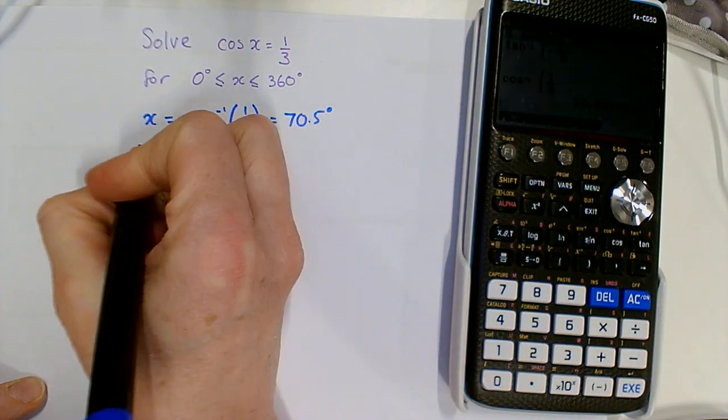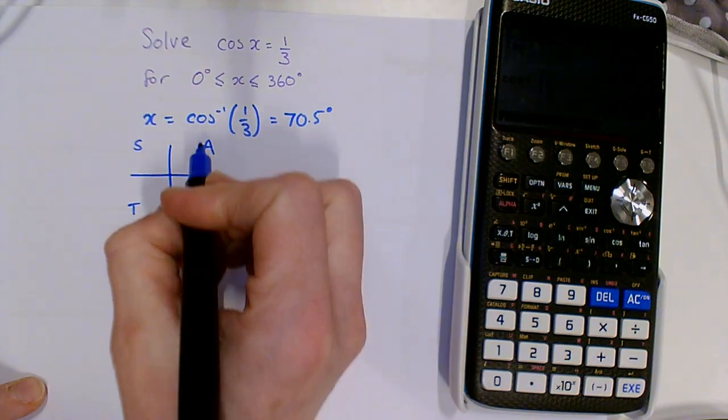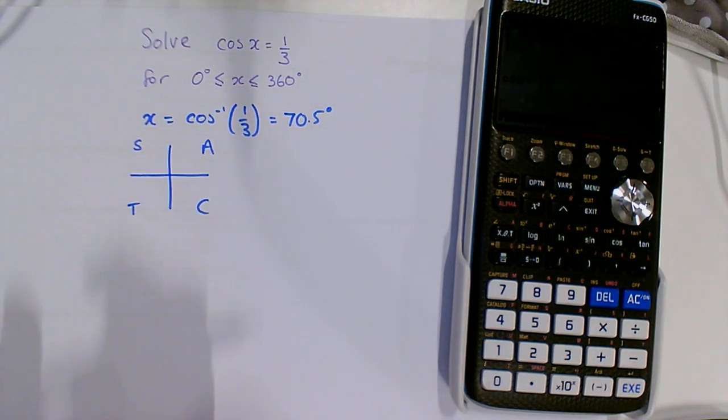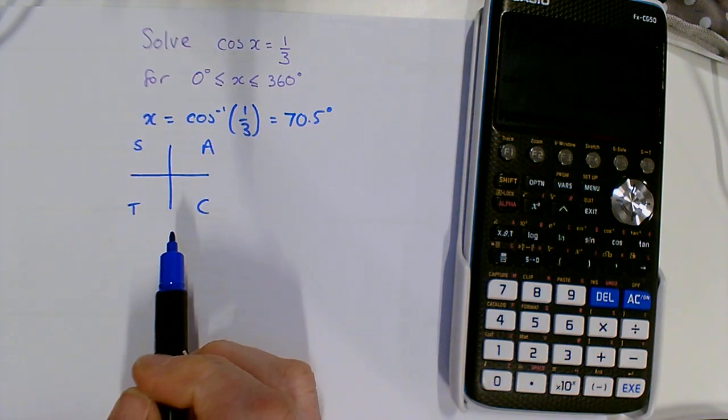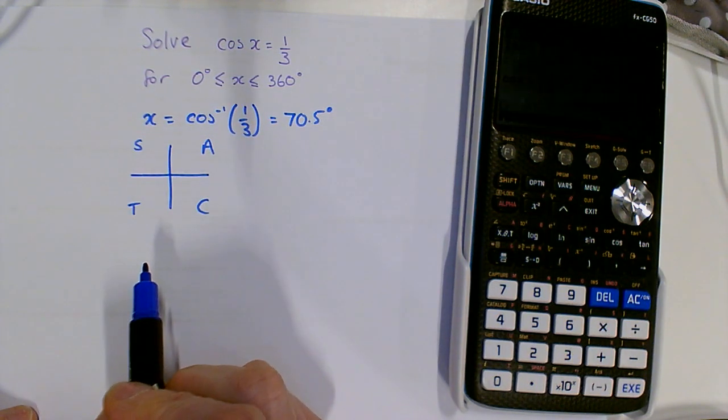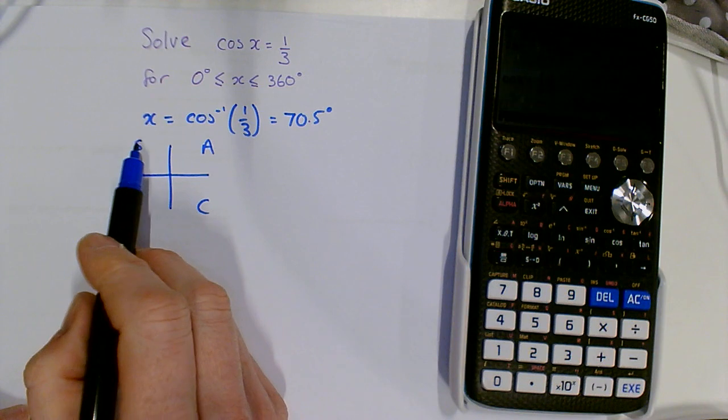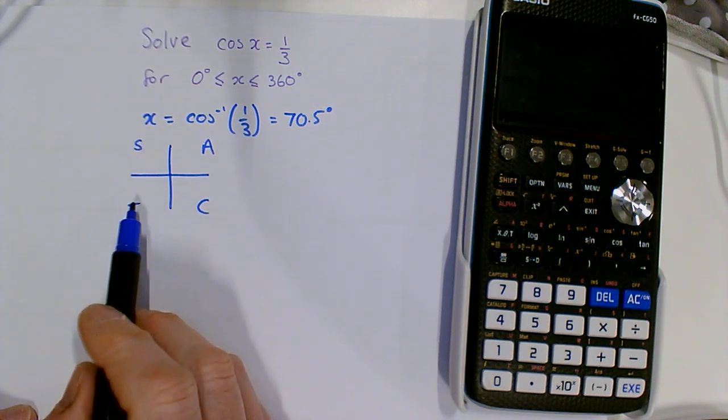If you remember from the other day, the letter represents which trig ratio is positive for angles in that quadrant. All are positive here, only sine is positive for obtuse angles.